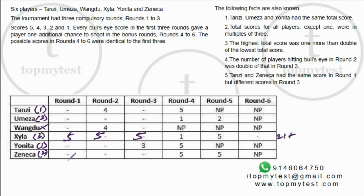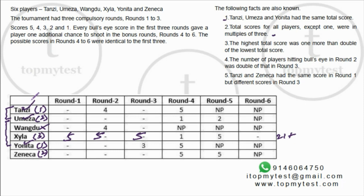Additional facts: Tanzi, Umeza, and Yonita had the same total score. All players except one had total scores that are multiples of three. Since Tanzi, Umeza, and Yonita share the same score, all three must have multiples of three — otherwise one of them not being a multiple would contradict the condition that only one player has a non-multiple of three.